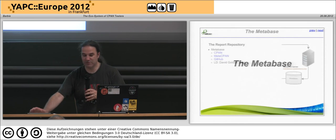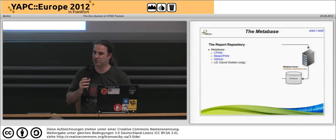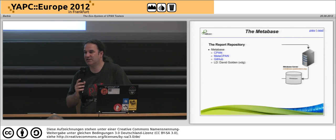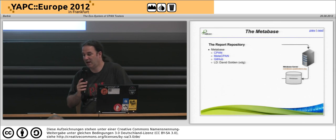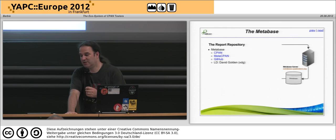This moves us on to the metabase. The metabase is our repository of all these test reports. When we started, we had plain text reports stored in an NNTP environment and sent over email. We realized there was a big limitation with that, so we got rid of it. We're now storing everything in the metabase — currently in a NoSQL database, specifically SimpleDB on Amazon — but we're looking to move towards MongoDB at some point in the future.